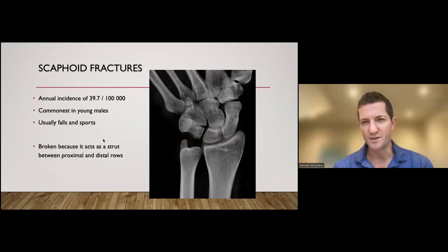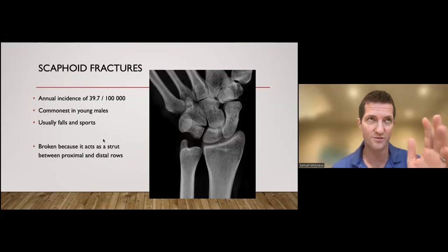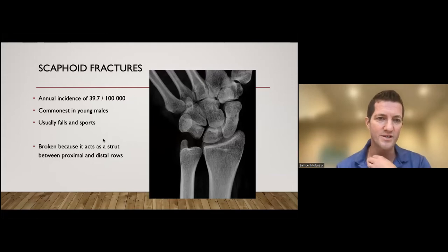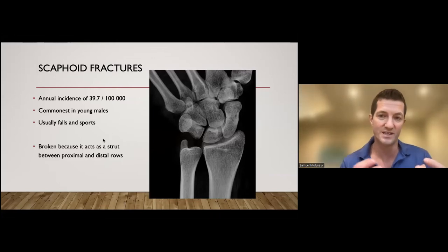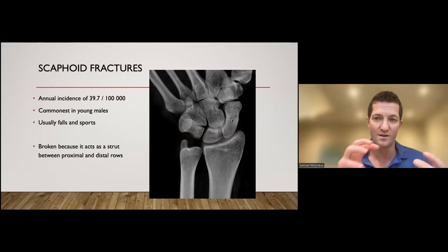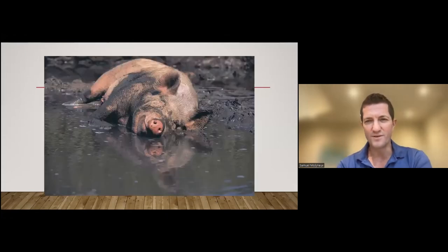Let's move on to scaphoid fractures briefly because this is going to be the vast cause in your real world of reasons why when you look at a distal radius or at a carpus on the lateral view, they appear to have a DISI deformity. They're the commonest of the carpal injuries really, annual incidence of about 40 per 100,000. They're usually young males taking part in sports. The reason the scaphoid breaks is because it's the longest of the bones. It's got the longest lever arm acting on it and it acts as a bit of a strut between the proximal and distal rows.